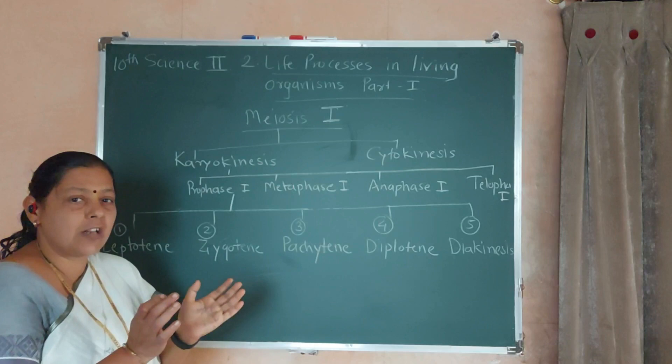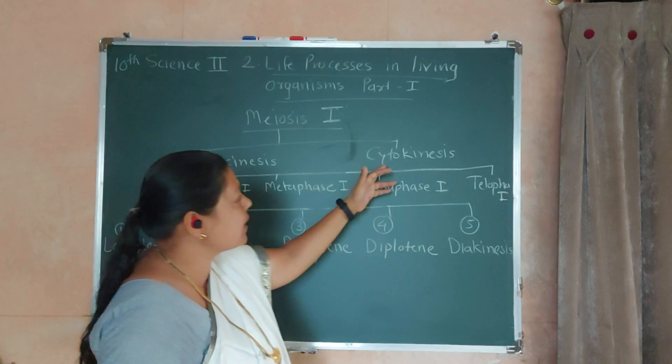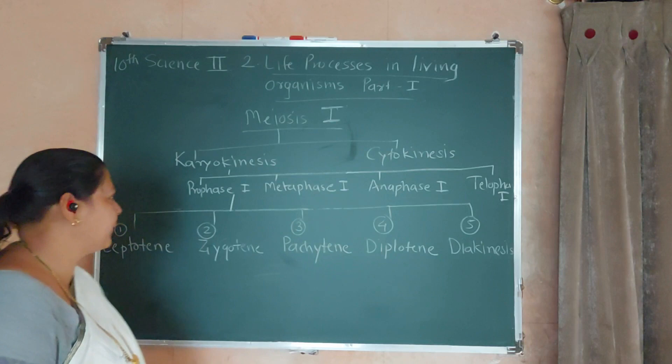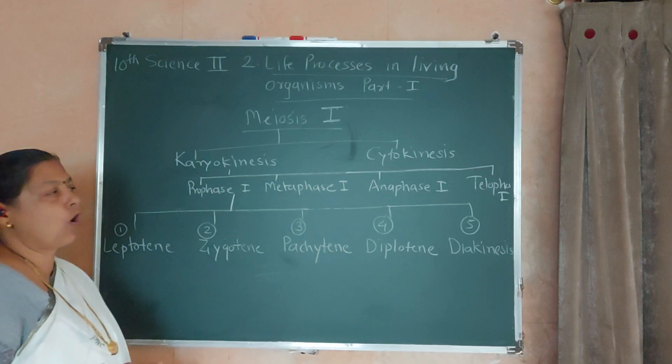Karyokinesis is the separation of the 2 nuclei — 2 nuclei are formed here. Cytokinesis is the cytoplasm division: it forms 2 different cells. That is, it furrows and 2 different cells actually form.